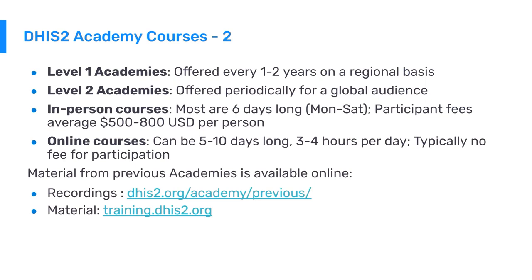Level 1 Academies are offered every one to two years on a regional basis, and Level 2 Academies are offered periodically for a global audience. In-person training usually lasts six days, and participant registration fees average around 500 to 800 US dollars per person. Online courses vary in length, typically five to ten days long at three to four hours per day, with no fee for participation. We keep histories of all previous material, including recordings, exercises, and other materials associated with our academies.